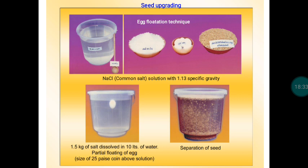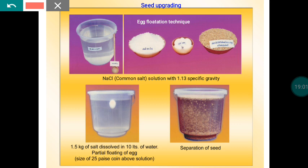These matters relate to upgrading the quality of seeds before sowing. For paddy, we follow the egg flotation technique. In this technique, we prepare a salt solution to separate fully-packed, nutrient-rich seeds from ill-filled, partly-filled, or chaffy seeds. We prepare a salt solution with a specific gravity of 1.13 g/cc.